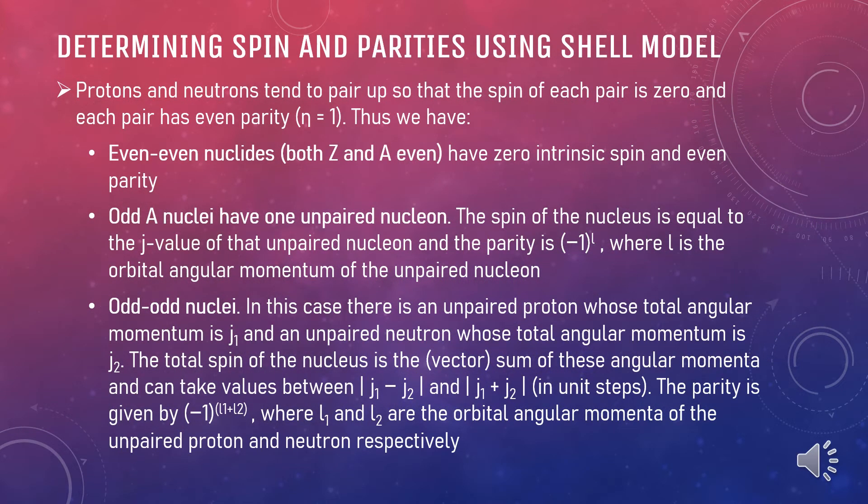Shell model can also determine the spin and parities of nuclei. The protons and neutrons tend to pair up so that the spin of each pair is zero and each pair has parity n equals 1. Thus, we will have three types of pairs. The first pair is the even-even nuclides that have zero intrinsic spin and even parity. While the second pair is odd-A nuclides that have one unpaired nucleon. The spin of the nucleus is equal to the J value of that unpaired nucleon and the parity is negative 1 to the power of L where L is the orbital angular momentum of the unpaired nucleon.